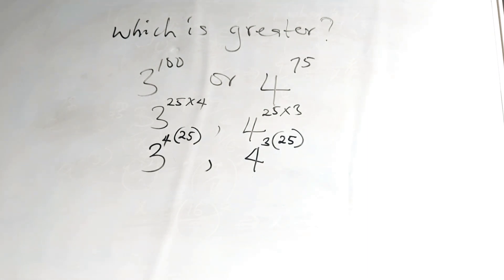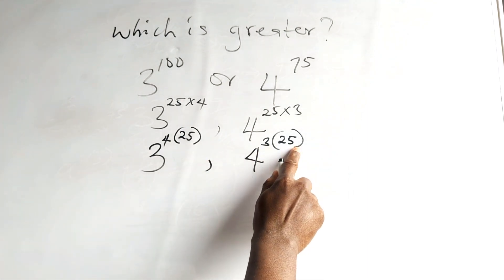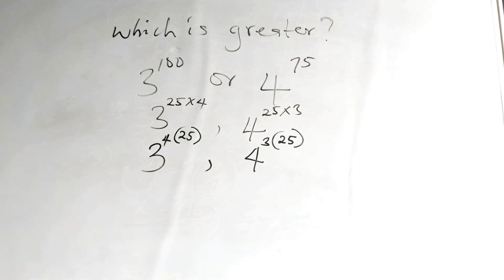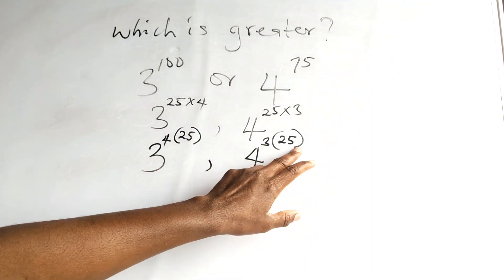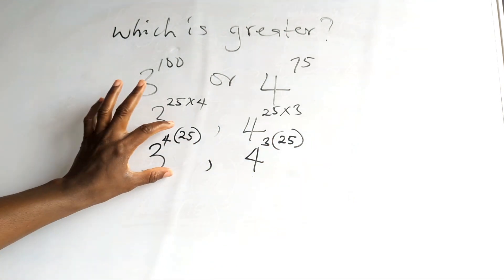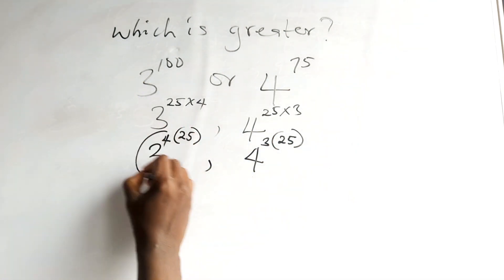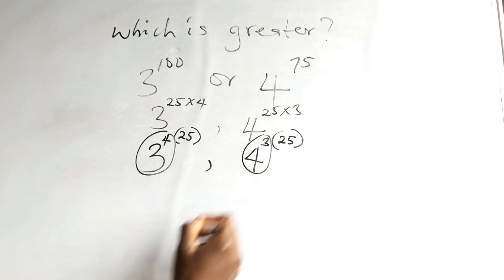Right? Now, we have 25 here, 25 here. Good. We balance that. Now, we don't have anything to do with this 25 and this 25. So, the only thing we do is we concentrate on this and this.